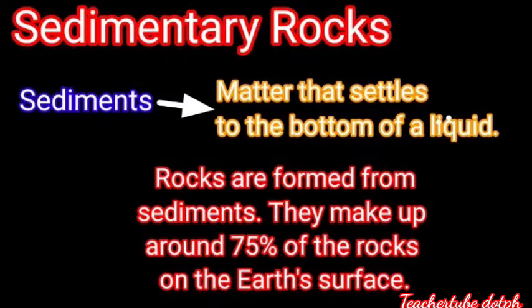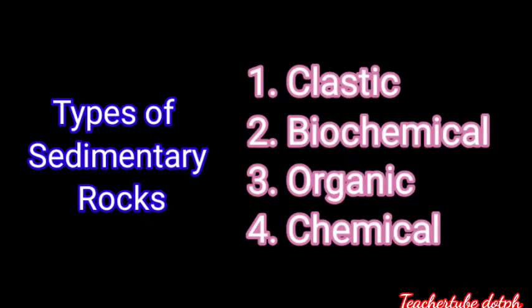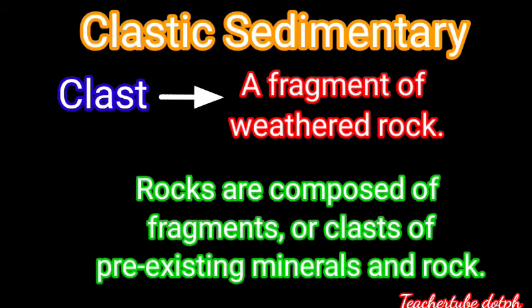Sedimentary rocks — the term implies they are made up of sediments. A sediment is matter that settles to the bottom of a liquid. Sedimentary rocks are formed from sediments and make up around 75 percent of the rocks on the earth's surface. There are four types of sedimentary rocks: clastic, biochemical, organic, and chemical.